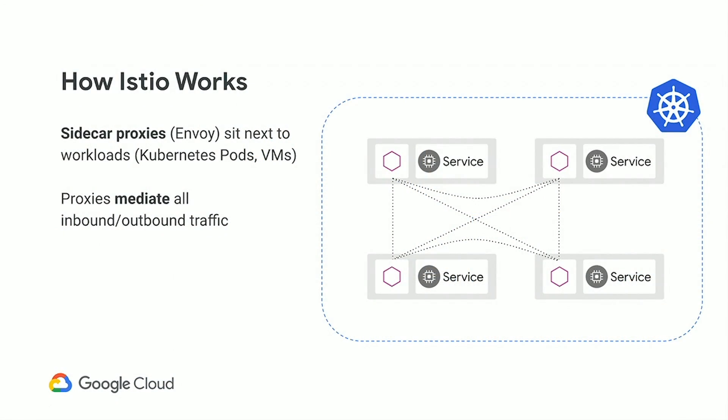How does Istio work? The way Istio works is through a set of sidecar proxies — this is the data plane. In this example, we have one Kubernetes cluster with a set of pods. Inside each pod, we have two containers. In Kubernetes, a pod can contain one or more containers, and they share the same Linux network interface, meaning containers in the same pod can talk to each other over localhost. This is how the magic of Istio works. Istio injects proxies into your workloads, and then all subsequent traffic, inbound and outbound, goes through those proxies.